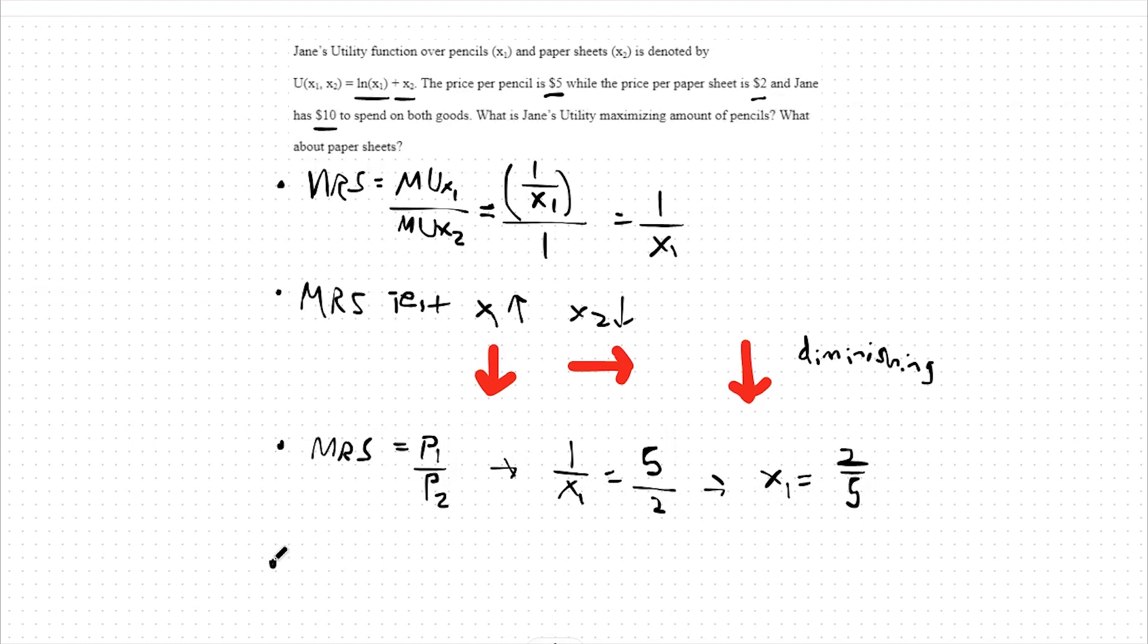If x1 equals 2 fifths, I can take this value and plug it into my budget constraint to figure out the optimal amount of x2. My budget constraint is p1 x1 plus p2 x2 equals m. Plugging in for the variables that we know, we have 5 x1 plus 2 x2 equals 10.